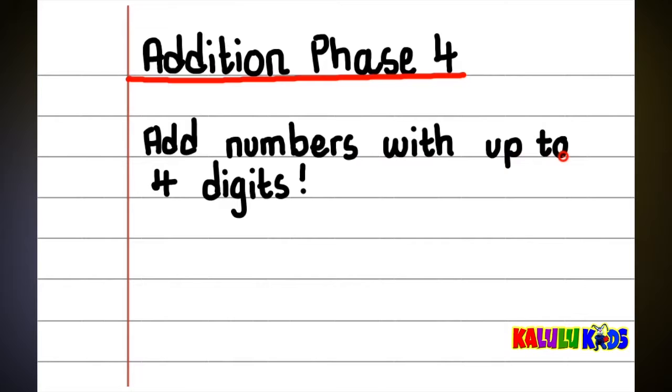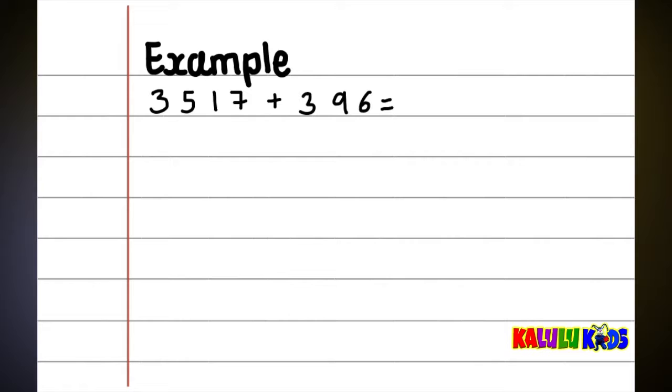For example, 3517 plus 396. For this method, you need to put these numbers in columns.